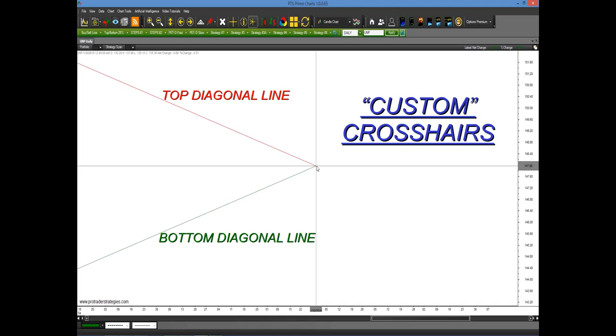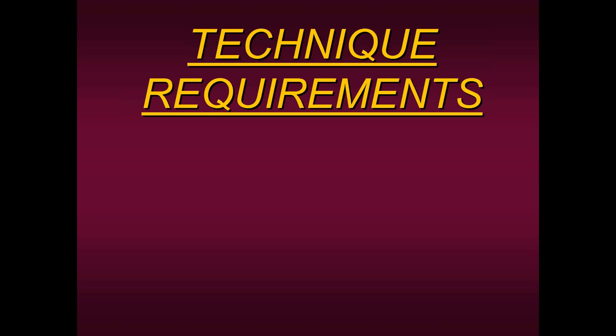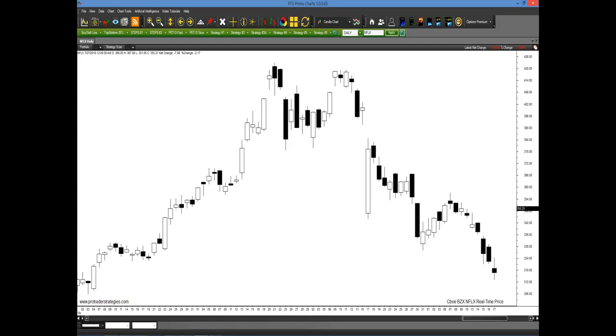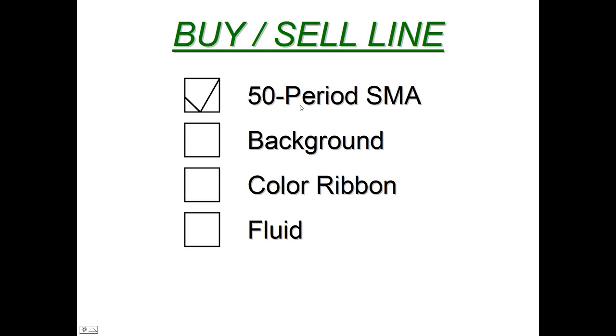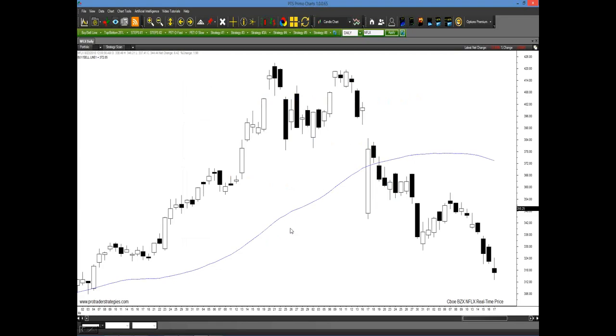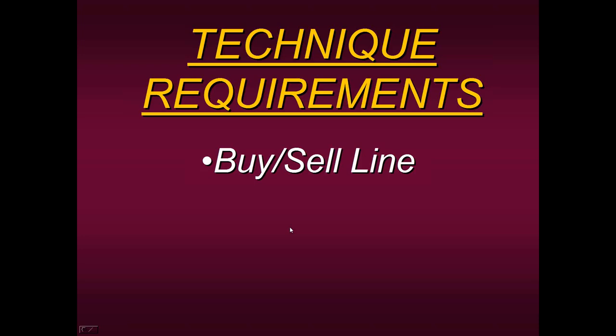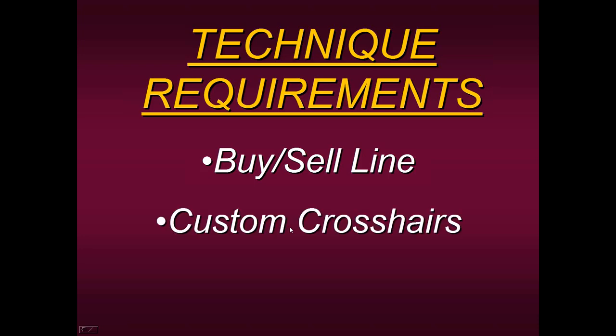So how are we going to use those diagonal lines to help us determine the trend? These are the technical requirements we need to use this tool: we need our buy-sell line. Now before you say there's a catch — the buy-sell line is simply the 50-period moving average. We call it the buy-sell line because we use it to tell us whether we should be buying or selling. In this context, we just want to use it to help us find out the strength of the trend. So we need the 50-period moving average and the custom crosshairs. That's all we need.